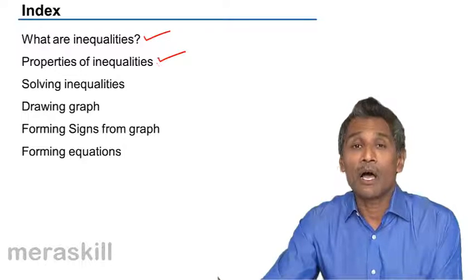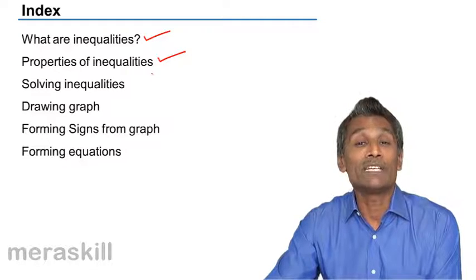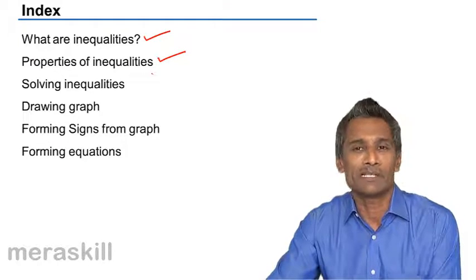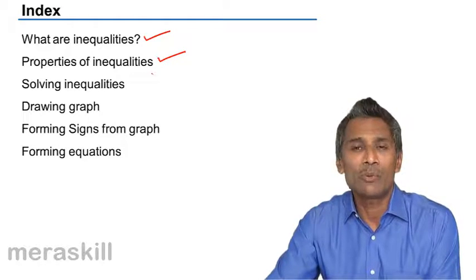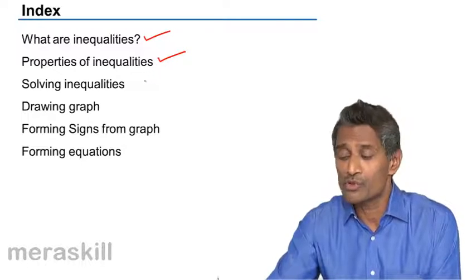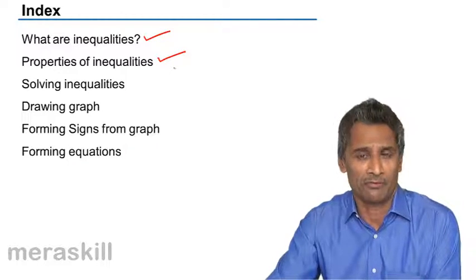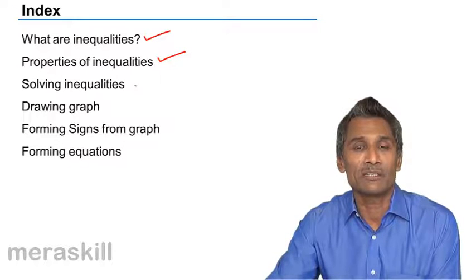Then, how do we apply these rules to solve inequations? When you have a particular inequation like 2x plus y is less than or equal to 7, which values of x and y could act as a solution? There will be a whole range of such pairs of x and y which could satisfy this condition.